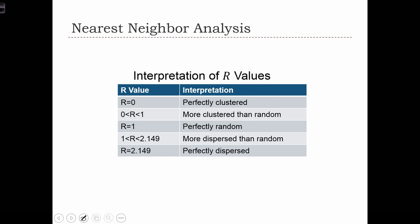Here's a summary: for r equals 0, the data are perfectly clustered; for r equals 1, perfectly random; and for r equals 2.149, perfectly dispersed.